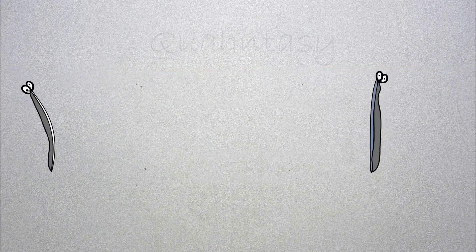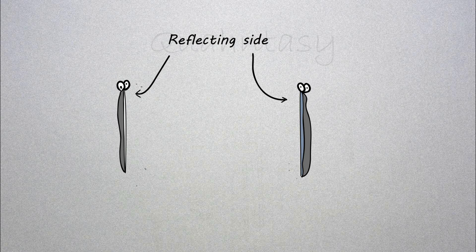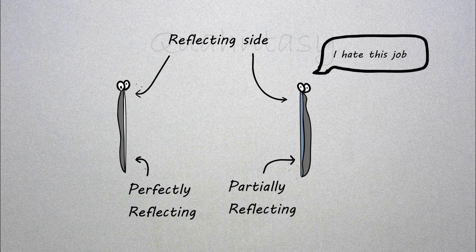We start with two very parallel mirrors. Here's the amazing part: one of these mirrors is perfectly reflecting, while the other one is very bad at its job—it is partially reflecting.